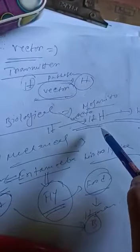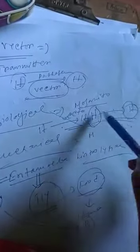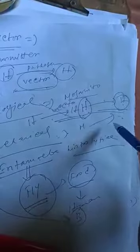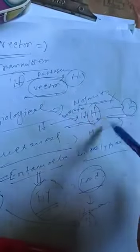Biological vector, for example, mosquito. The mosquito carries plasmodium. When a mosquito bites an infected person, if the person has malaria, the mosquito takes the plasmodium.